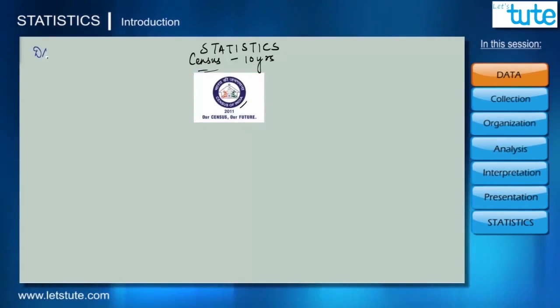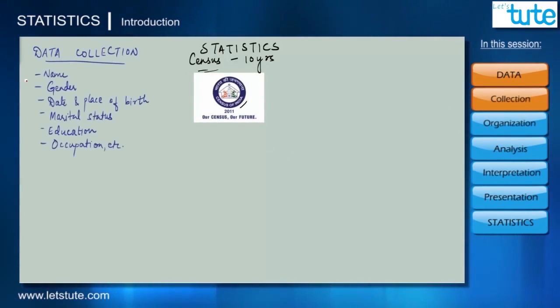Firstly, data collection is done over the whole population of a country and it comprises various details of every usual resident of the country like name, gender, place of birth, marital status, education, occupation, etc.